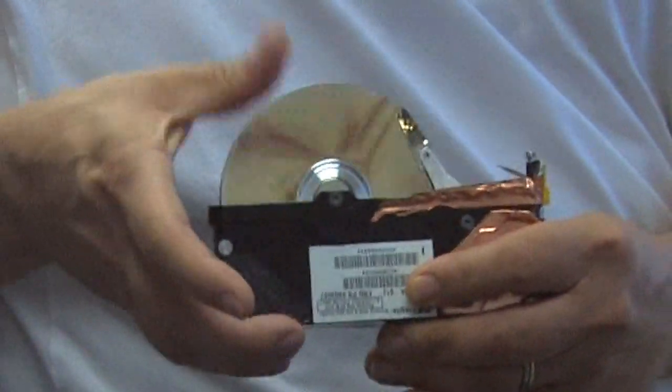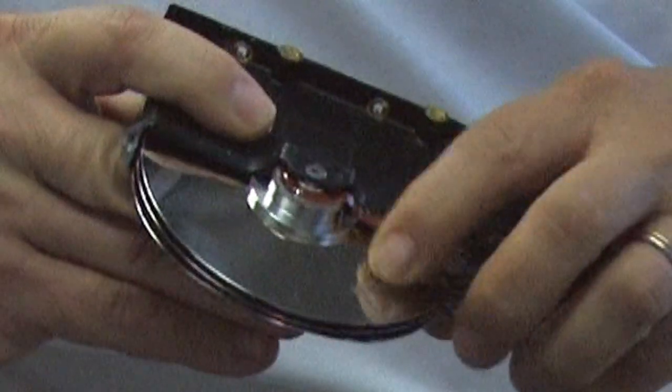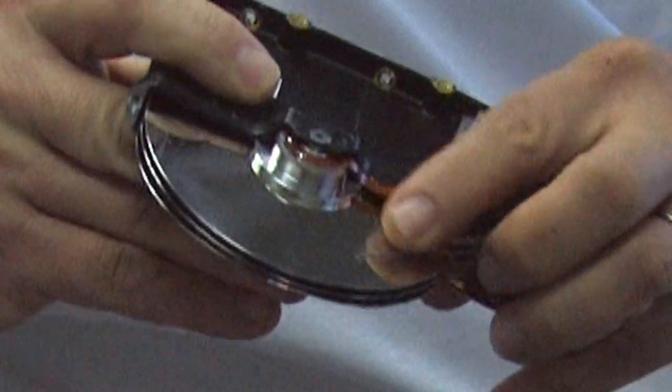The hard drive disks spin around and the little heads right here go across the surface of the disk and write magnetically.